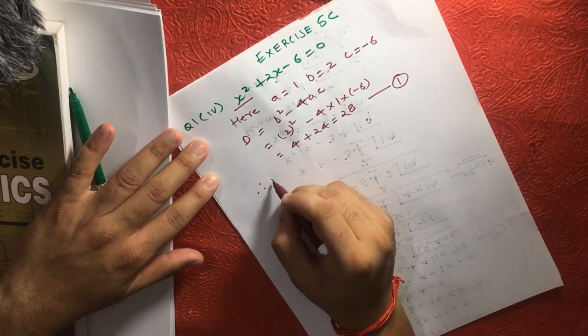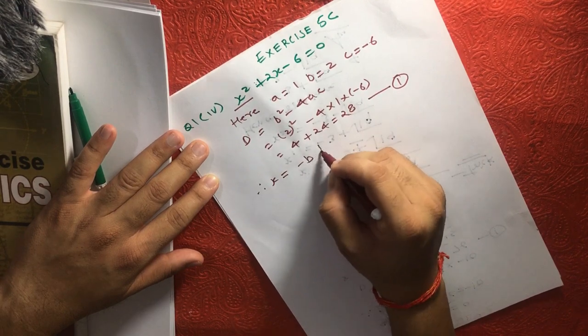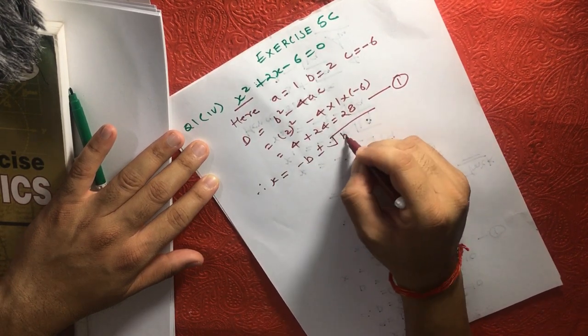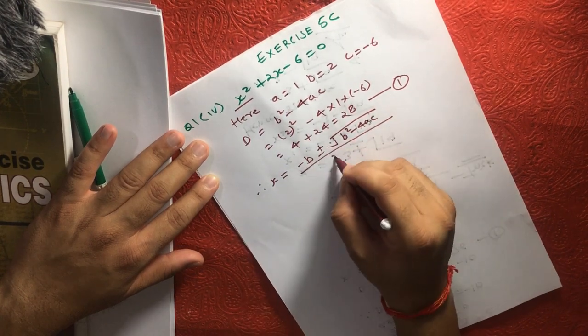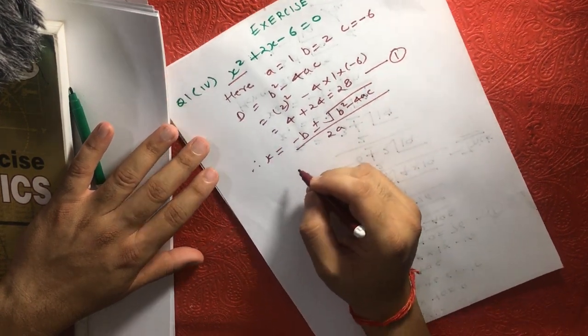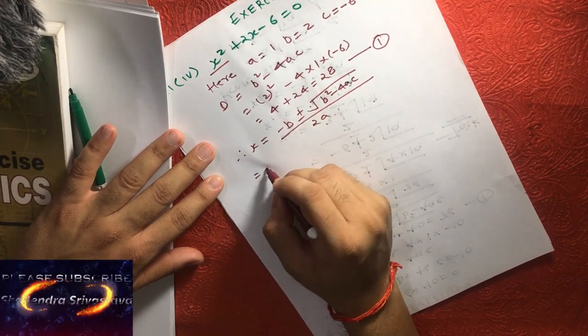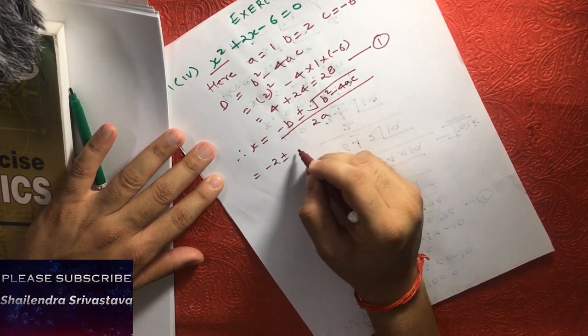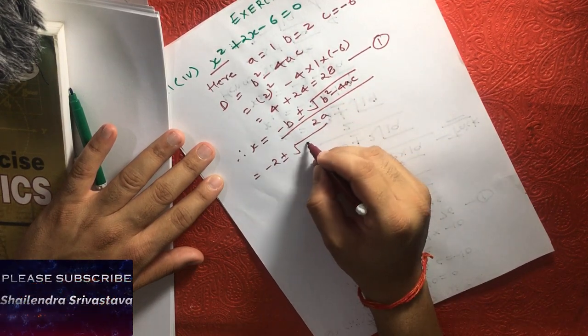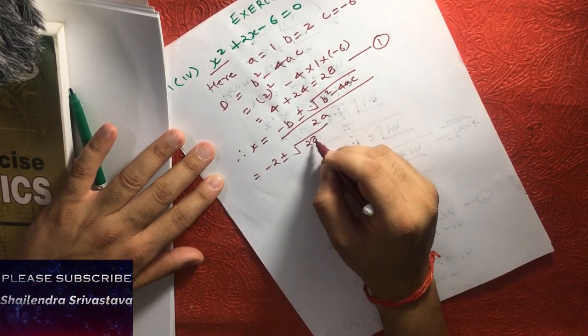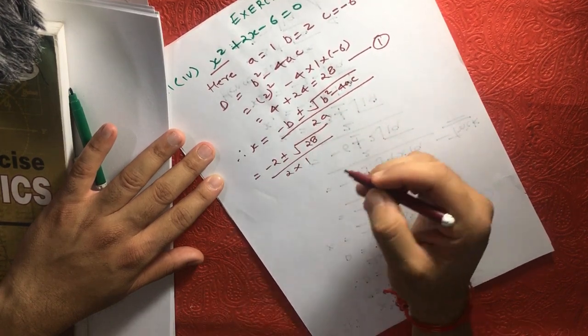Now we have the equation: x equals minus B plus minus square root of B squared minus 4AC, all divided by 2A. If we solve this equation, we can see minus B is minus 2 plus minus square root of B squared minus 4AC. We already know this is 28, divided by 2 into A, which is 1.